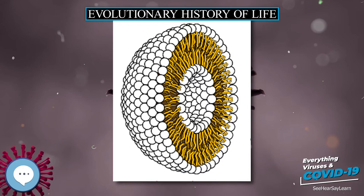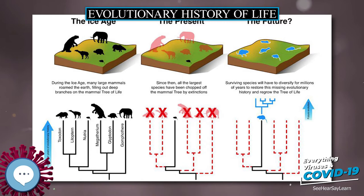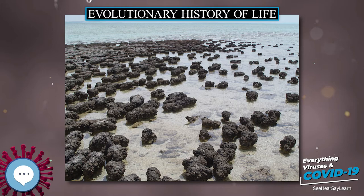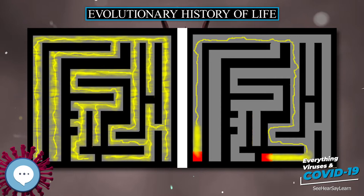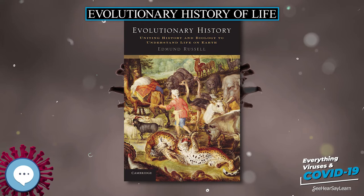While there is no direct evidence of conditions on Earth 4 to 3.8 Ga, there is no reason to think that the Earth was not also affected by this late heavy bombardment. This event may well have stripped away any previous atmosphere and oceans; in this case gases and water from comet impacts may have contributed to their replacement, although outgassing from volcanoes on Earth would have supplied at least half. However, if subsurface microbial life had evolved by this point, it would have survived the bombardment.